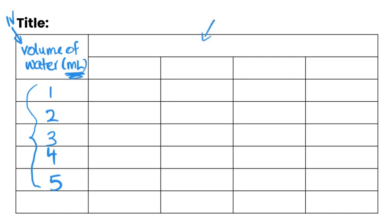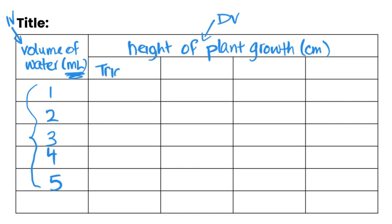Now along the top here goes our dependent variable. And so our dependent variable in this case is the height of plant growth. And we're going to include our units. And for this example, it's centimeters.